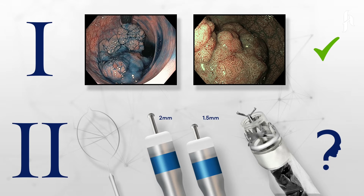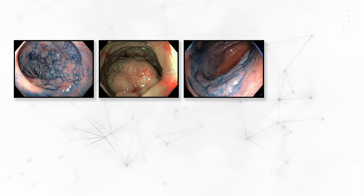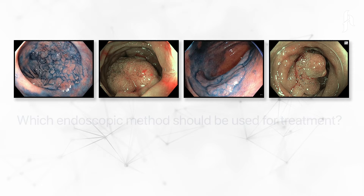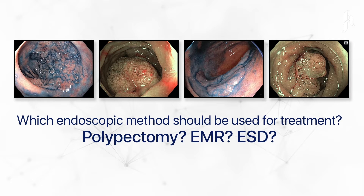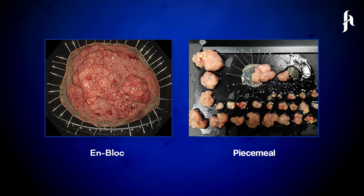After that, the polyp is found to be resectable with endoscopy alone, without surgery. There are several methods for polyp removal. The important point here is whether the polyp should be removed as a single piece, or divided into small fragments and removed in multiple pieces.